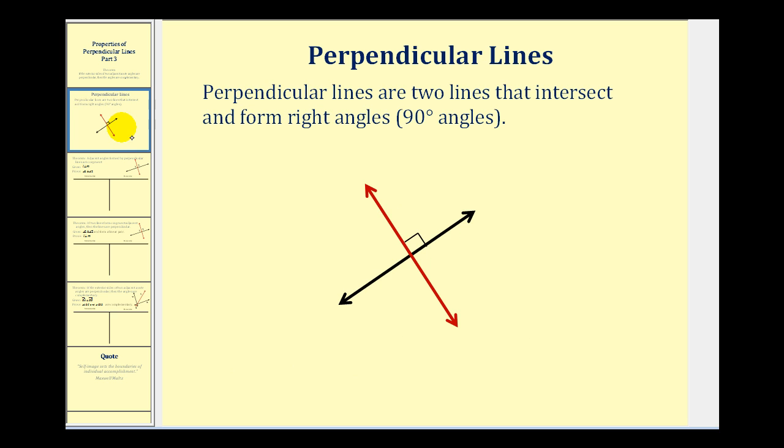Let's start by defining perpendicular lines. Perpendicular lines are two lines that intersect and form right angles, as we see here.